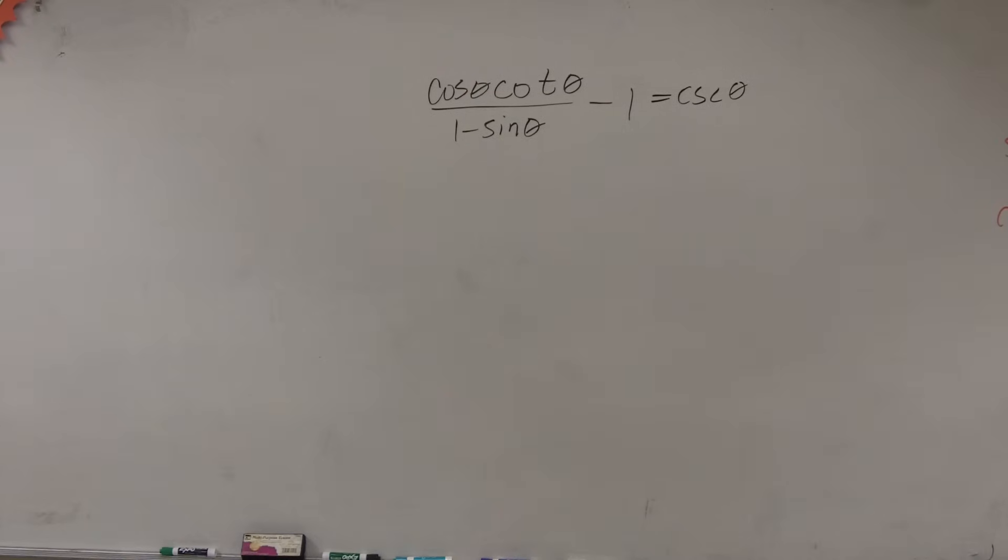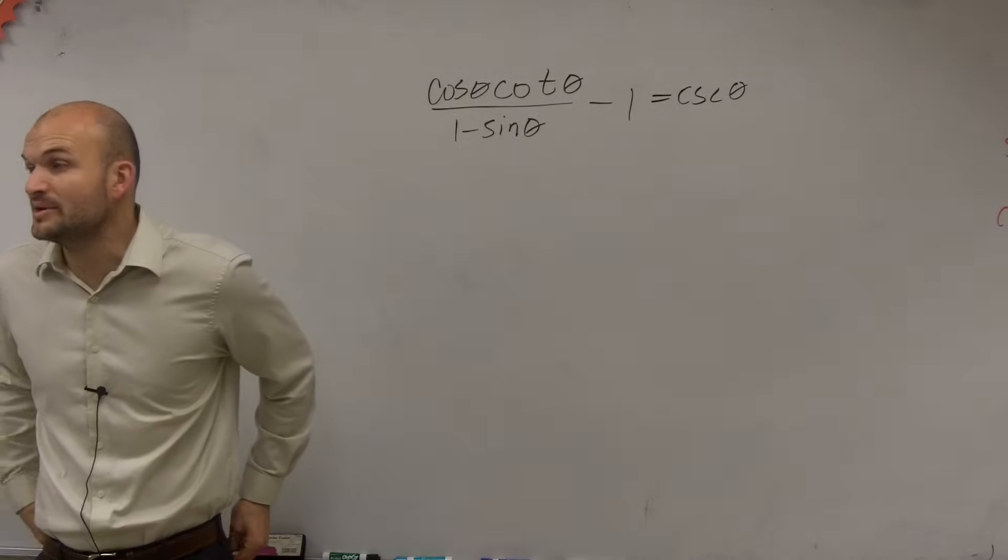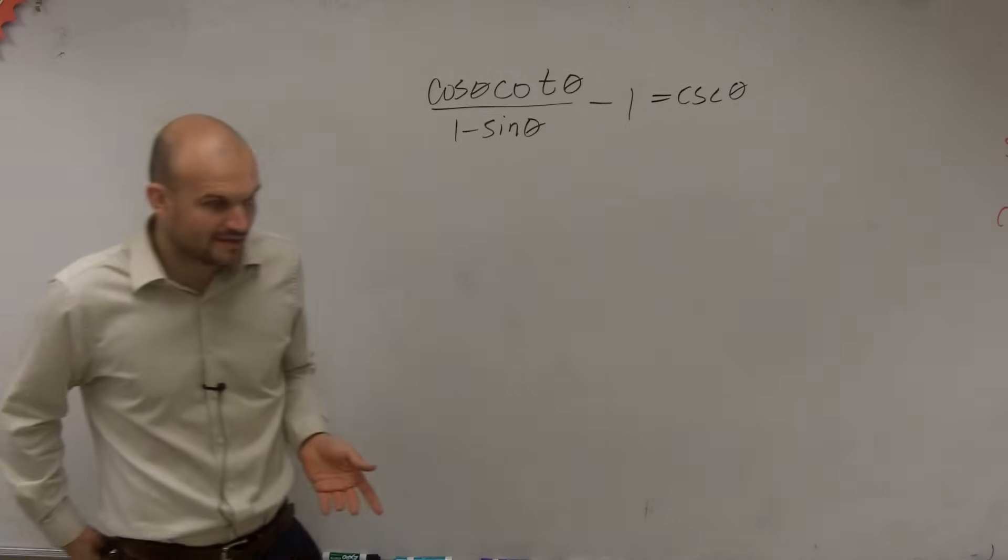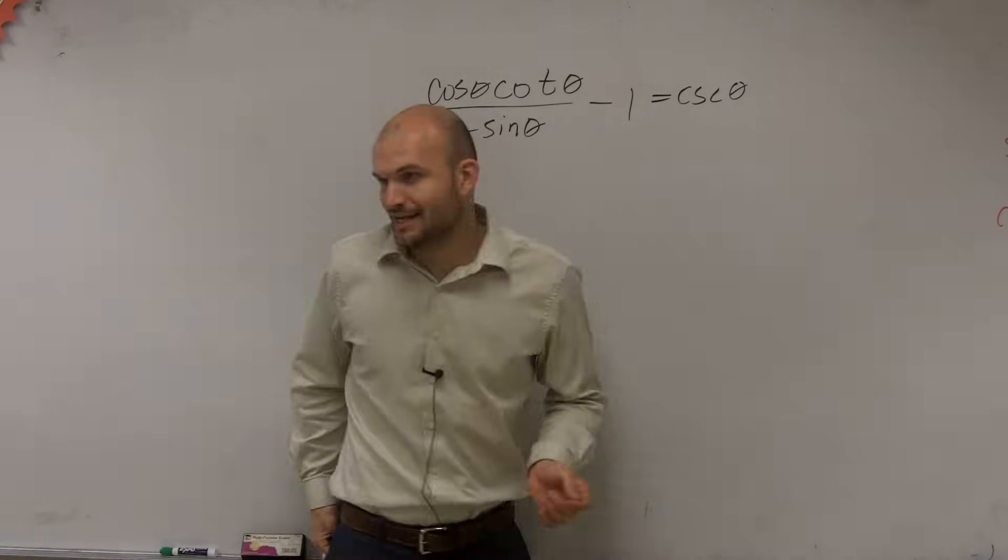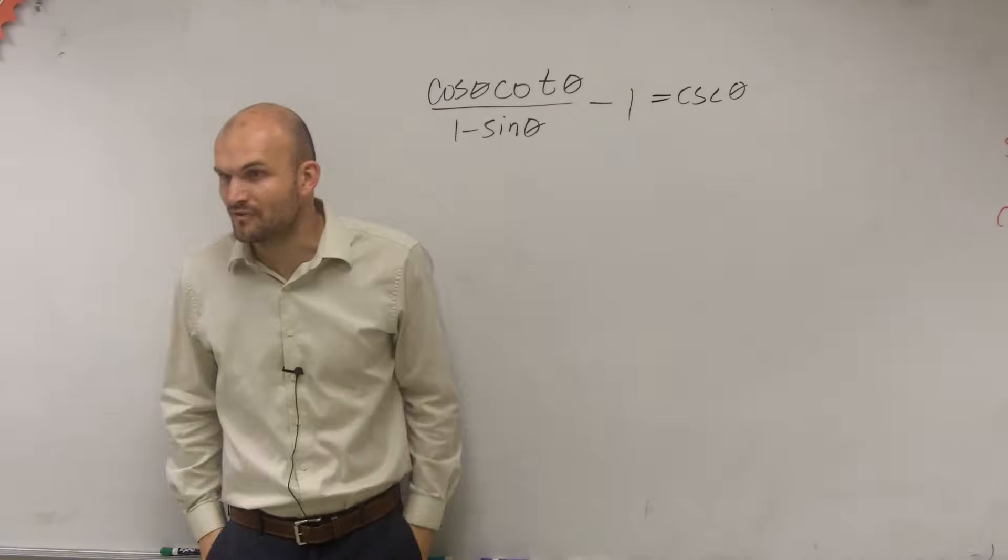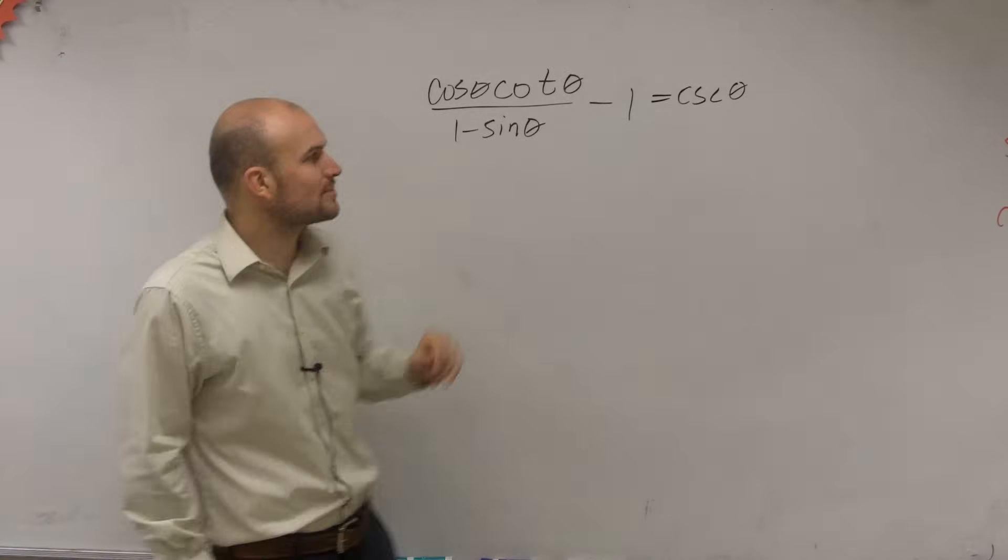I'll go over it for you. So by solving this identity, we can look at two different sides that we want to solve for or simplify. And I'm pretty sure I can get everybody to agree that working on the left side is going to be the ideal side to simplify, right? Because this side's pretty much already simplified. So let's work on the left side.